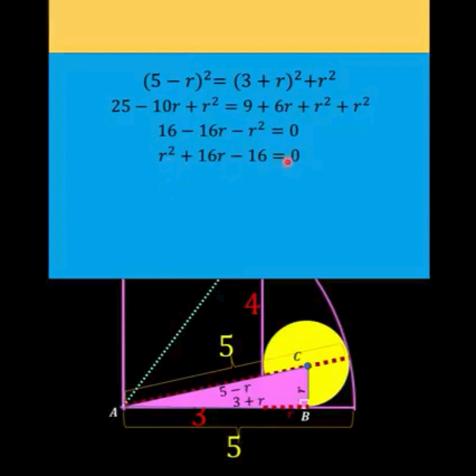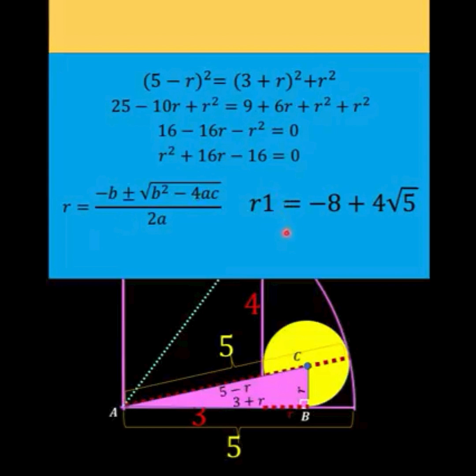This is a quadratic equation which we can solve using quadratic formula. And so using quadratic formula and simplifying we arrive at r₁ = -8 + 4√5 and r₂ = -8 - 4√5. Since we are talking here about the radius of the small circle r cannot be negative. And so we disregard r₂ and we accept r₁ as our solution for the radius.